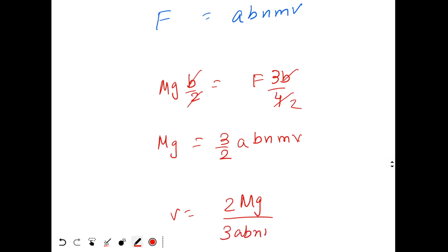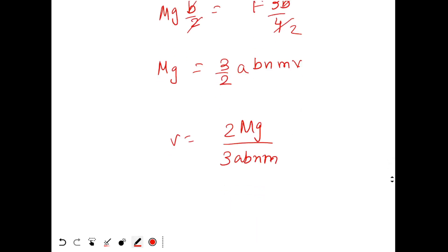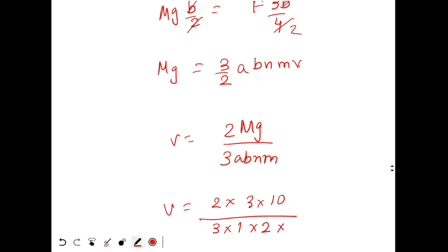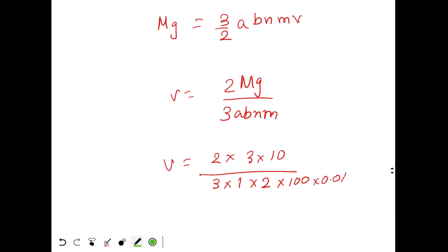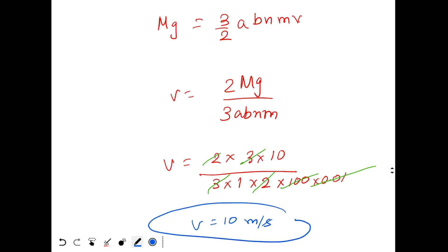Substituting the values: capital M = 3 kg, g = 10, A = 1 m, B = 2 m, n = 100, small m = 0.01. So v = (2 × 3 × 10) / (3 × 1 × 2 × 100 × 0.01). The 100 × 0.01 cancels to 1, 3 cancels, 2 cancels, giving v = 10 m/s. This is the answer.